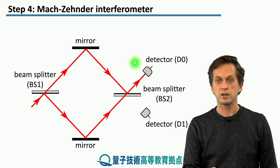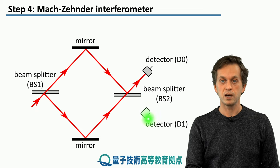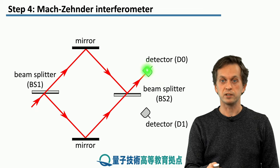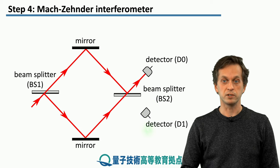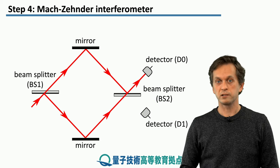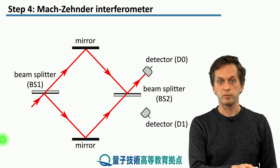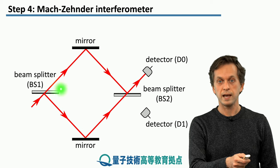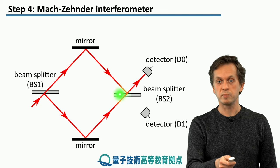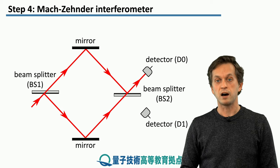And then we ask the questions. When will D0 click? When will detector D1 click? What's the intensity measured at detector D0? What's the intensity measured at detector D1? And so on. In this particular case, we assume that we only have light coming in from the bottom, over here. And that the mirrors and beam splitters are set in such a way that the path lengths are the same.